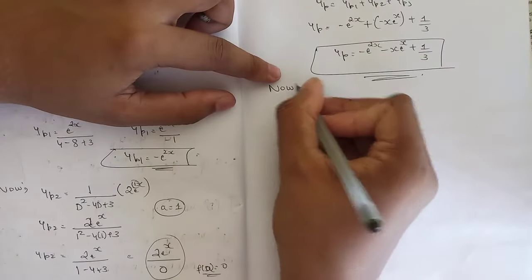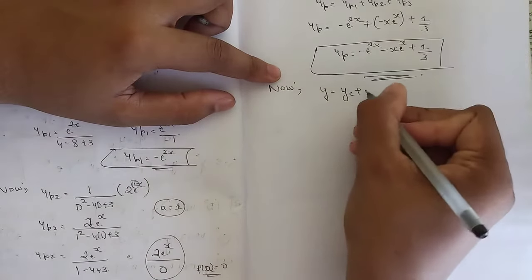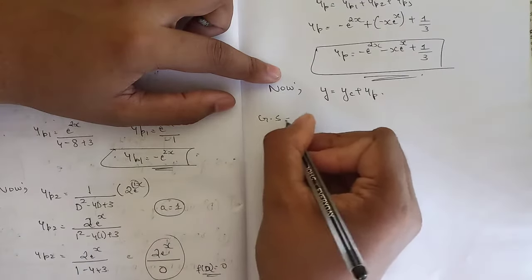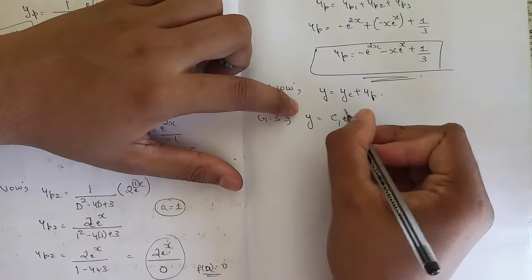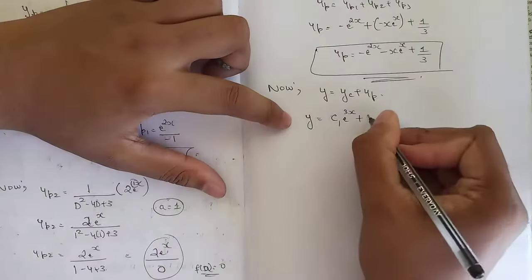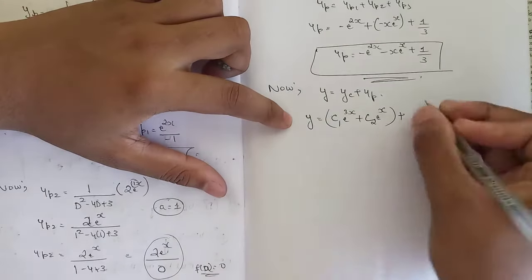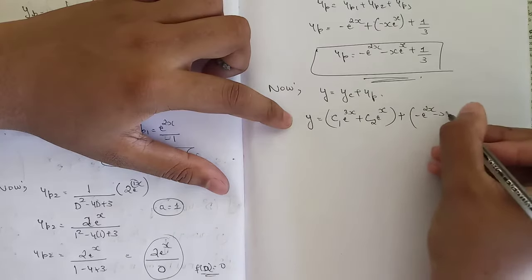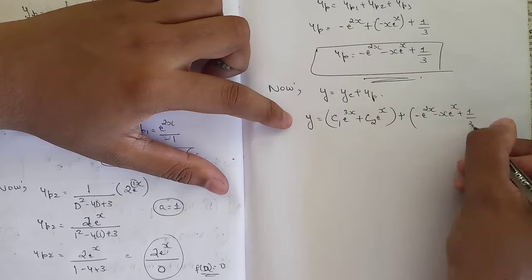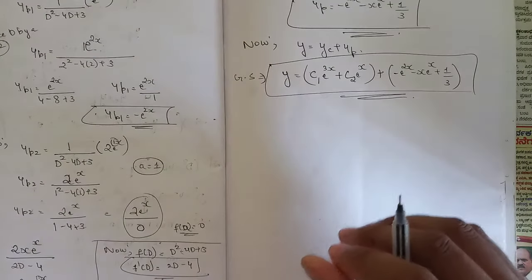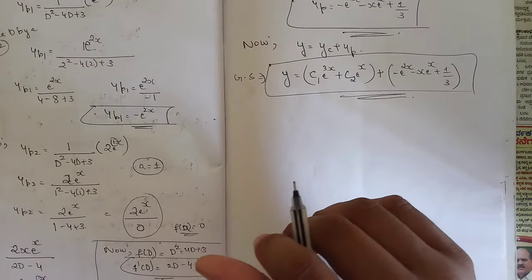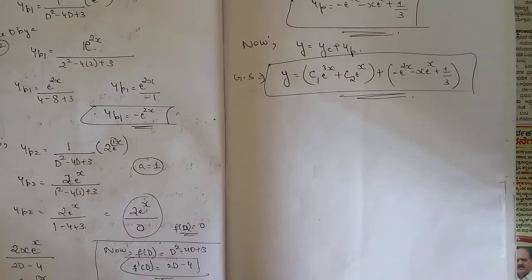The final general solution is y = yc + yp: y = c₁·e^(3x) + c₂·e^x - e^(2x) - x·e^x + 1/3. The question looks lengthy but is very easy if you know the method and the steps. That's all for this session. In the next session we will continue with Type 1 problems. Thank you.